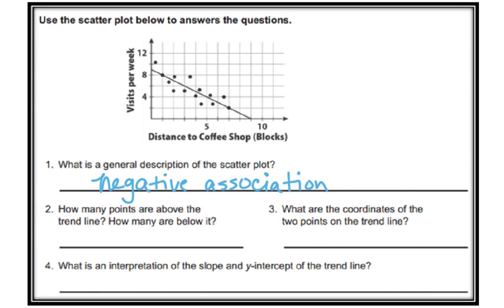Number two: How many points are above the trend line and how many are below? Above, we've got one, two, three, four, five, six. Below, one, two, three, four, five, six. So we've got six above and six below. Remember, that is what we're wanting.